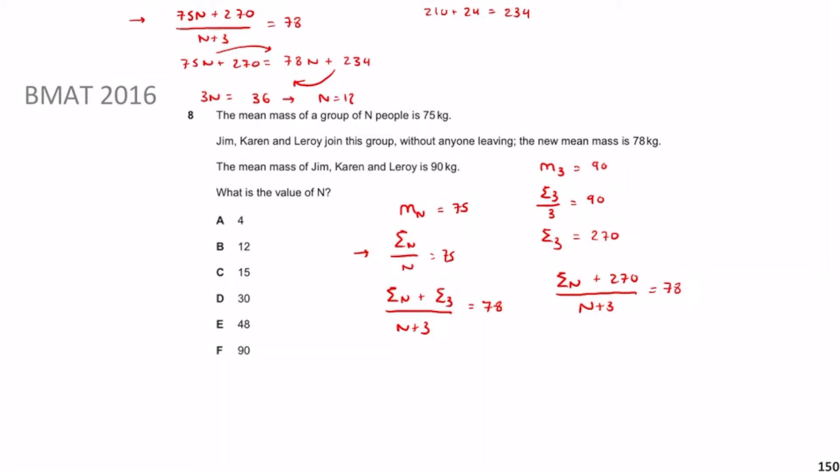Remember, n must be a whole number — if you get a decimal that means something went wrong, because you can't have a decimal number of people. So n = 12: the answer is B. Hopefully that has made sense; looking forward to seeing you in the next video.